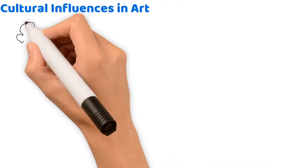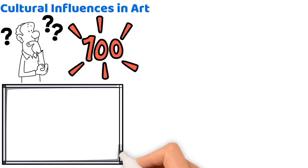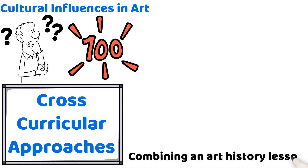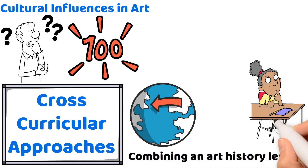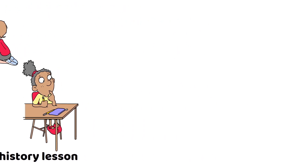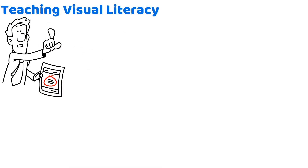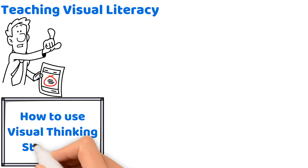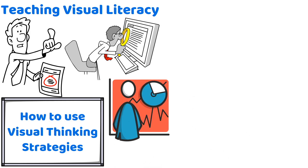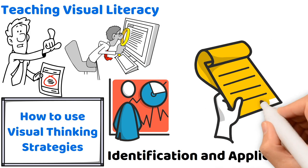Cultural influences in art often appear as a question about how to integrate art from various cultures into the curriculum. The best answers will suggest using cross-curricular approaches such as combining an art history lesson that covers a broad range of cultures and encourages students to explore and present art forms from their own or different cultures. Teaching visual literacy is an important topic on your exam. If you receive a question about how to use visual thinking strategies to enhance students' ability to analyze and discuss artworks critically, scan the answer options for solutions that utilize activities involving the identification and application of art elements and principles.